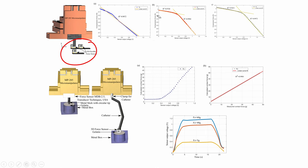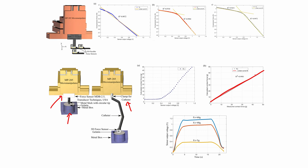Instead of measuring resistance directly, a potential divider or Wheatstone bridge gives the voltage change. Applying a known force reveals the output voltage, allowing calibration of the fabricated sensor. This is a very important experiment — whenever you fabricate any sensor you must calibrate it against a commercial sensor. For tissue testing, phantom tissue is used first: a gelatin-filled metal box acts as the phantom. Pressing the catheter onto the gelatin shows calculated contact force versus measured contact force, with an extremely linear sensor response — which is ideal.